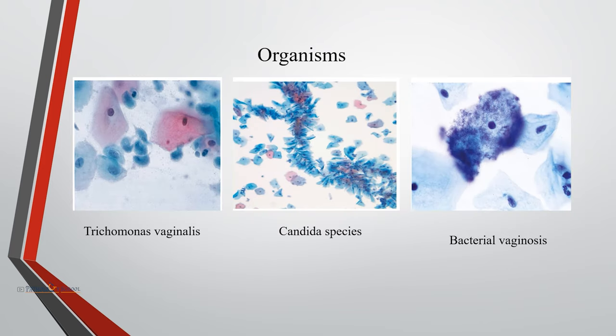Let us discuss some organisms commonly encountered in cervical cytology. Trichomonas vaginalis appears as pear-shaped organisms — round to oval, cyanophilic — measuring 15 to 30 micrometers in diameter. The nucleus is pale vesicular, eccentrically located, with eosinophilic cytoplasmic granules. They are usually associated with background changes including mature squamous cells with small perinuclear halos called tick change, and 3D clusters of neutrophils called polyballs.